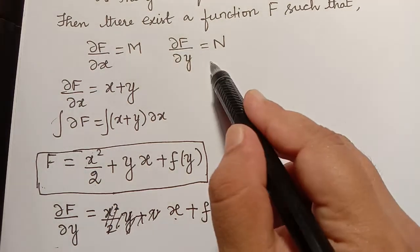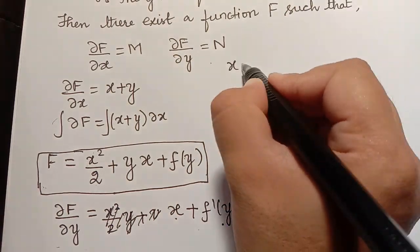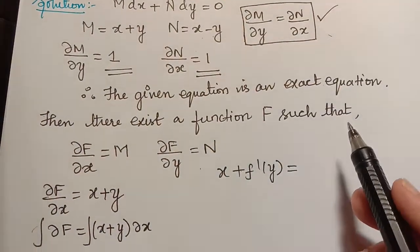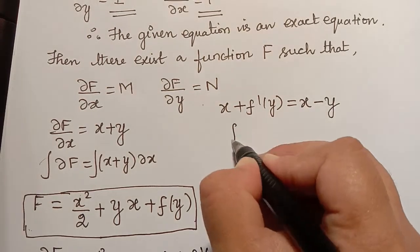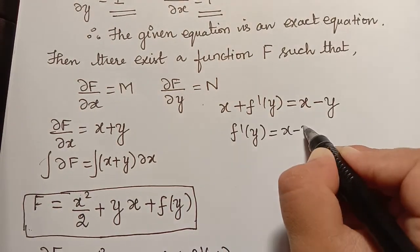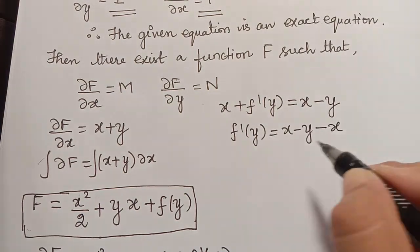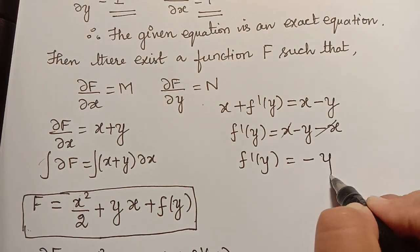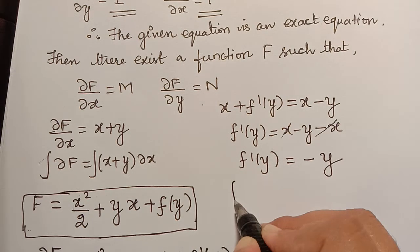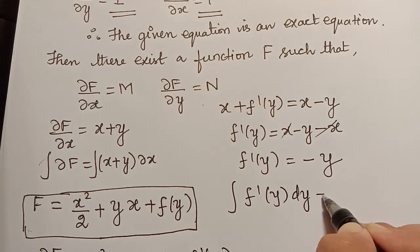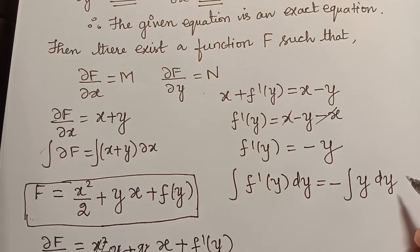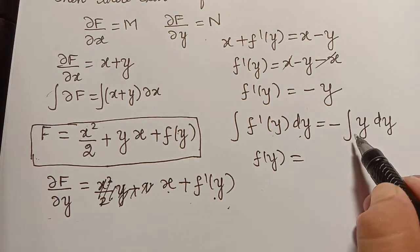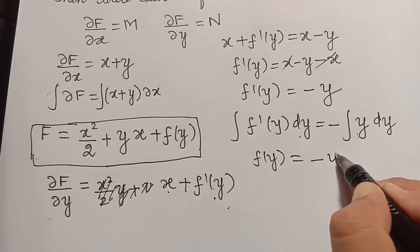Substituting into ∂F/∂y = N, we get x + f'(y) = x - y. Solving for f'(y): x cancels with -x, giving f'(y) = -y. Integrating both sides with respect to y: the integral of f'(y)dy is f(y), which equals -∫y dy = -y²/2. So f(y) = -y²/2.